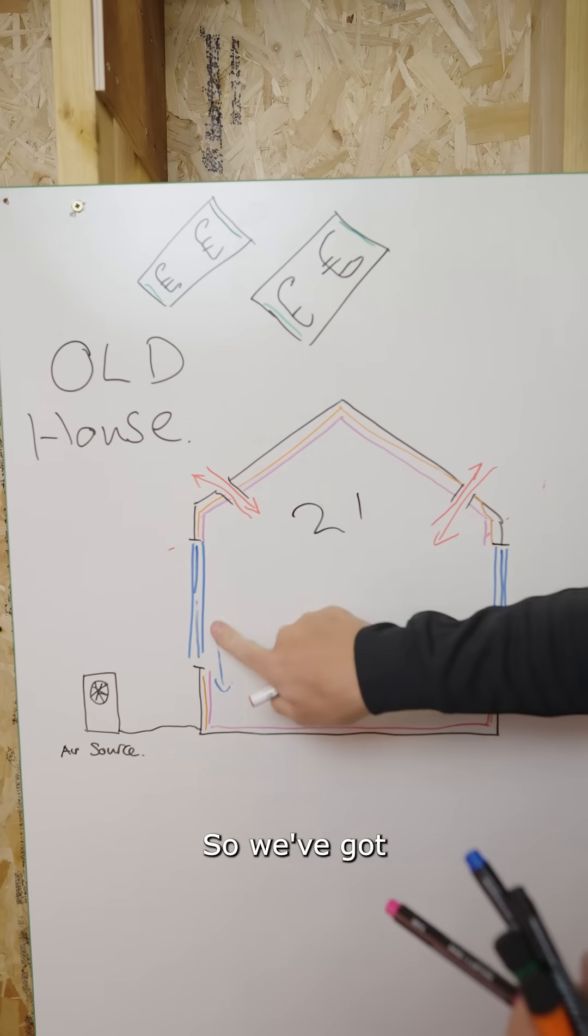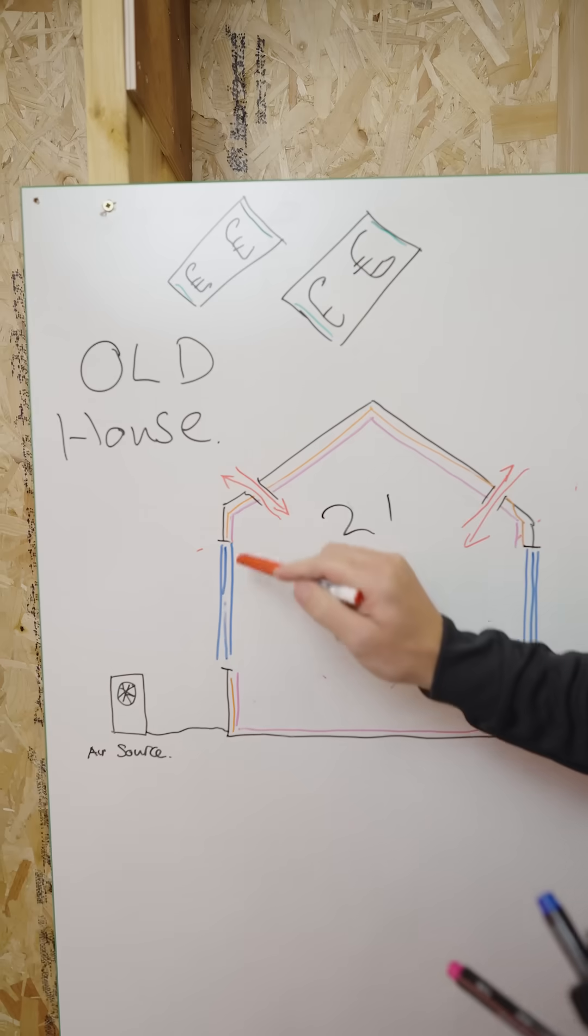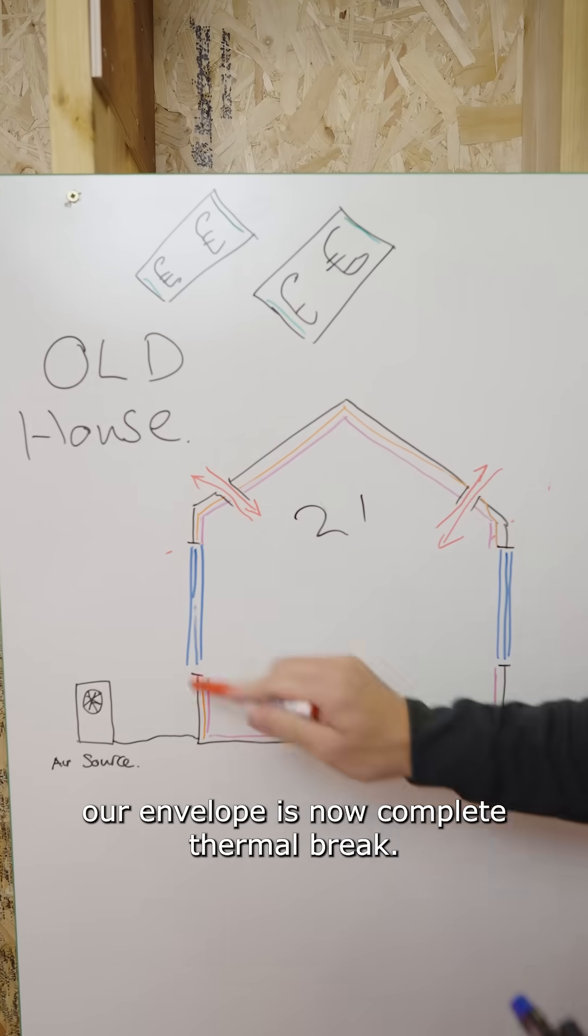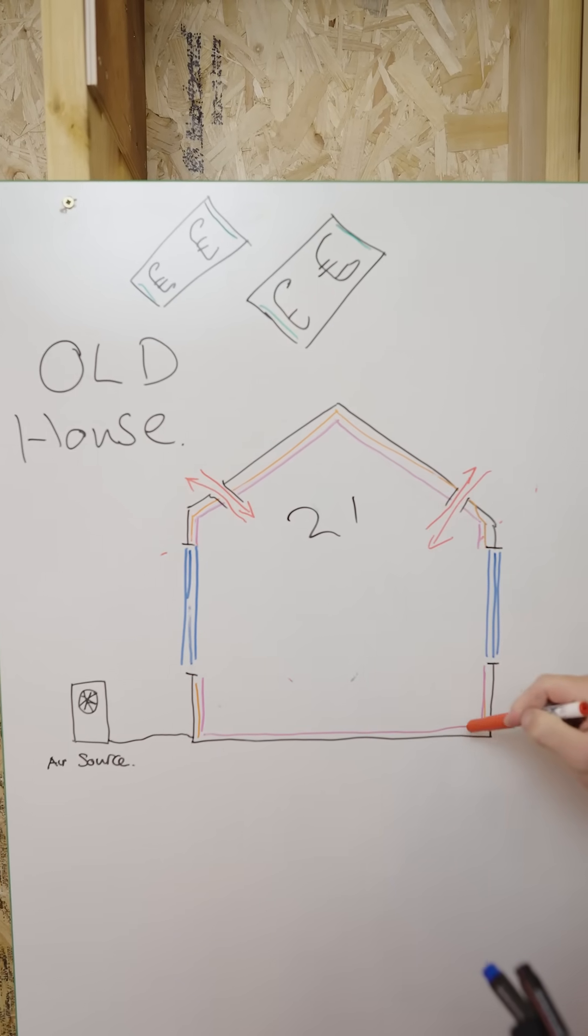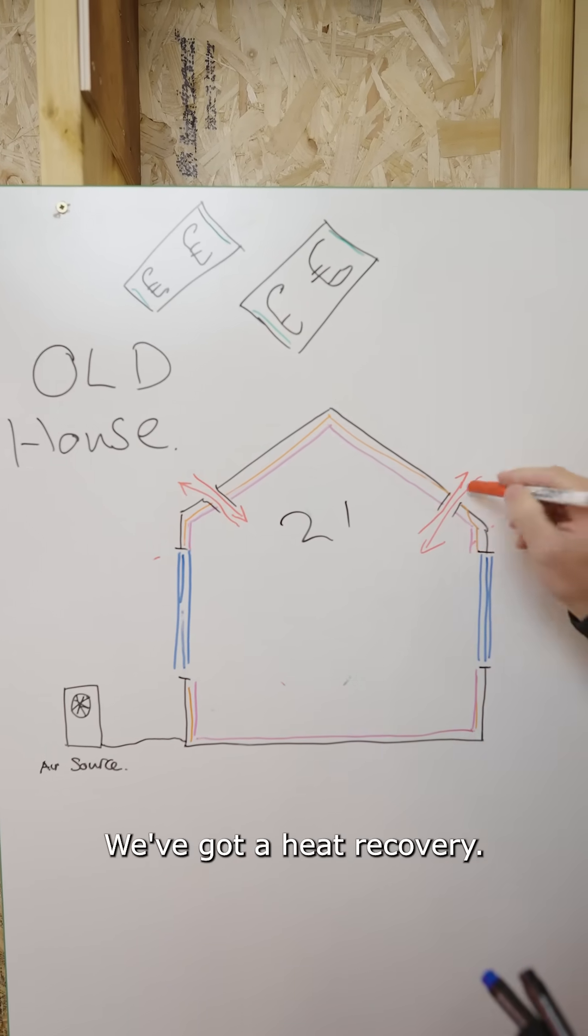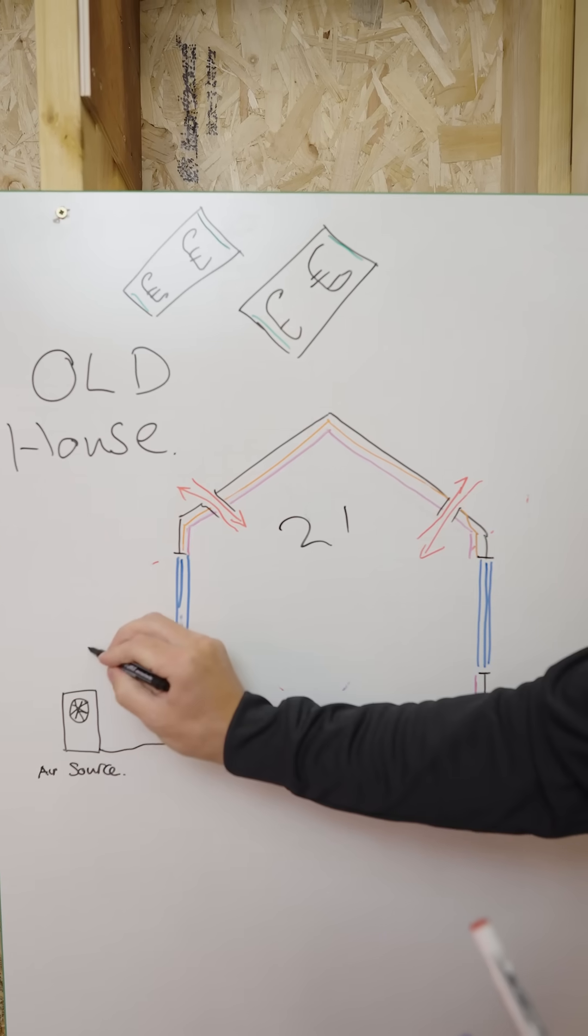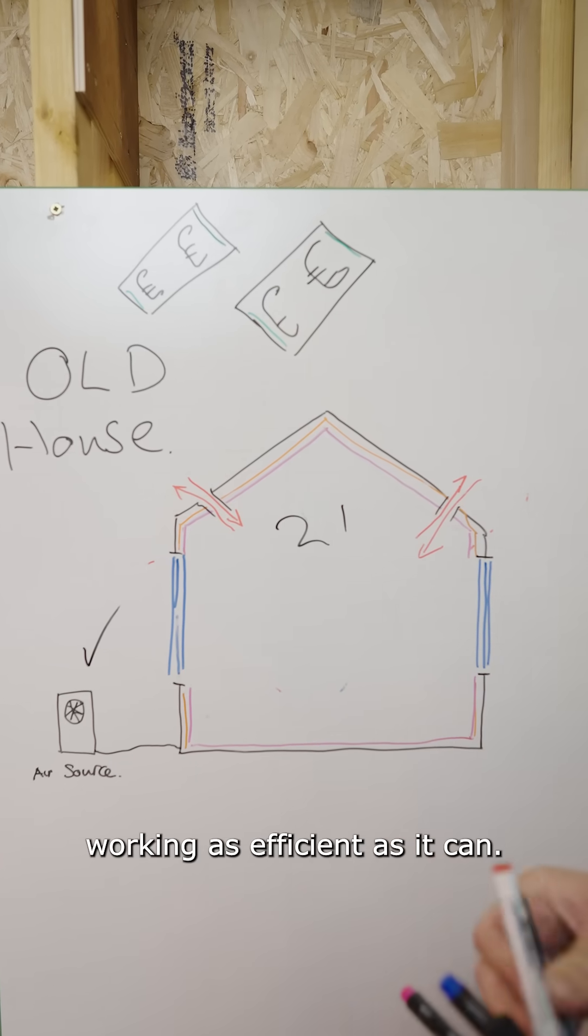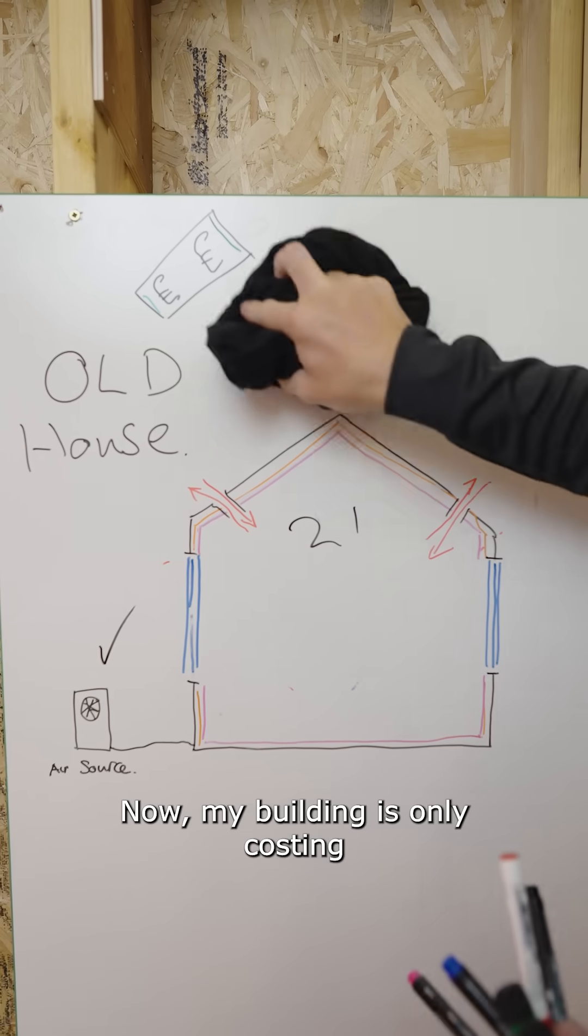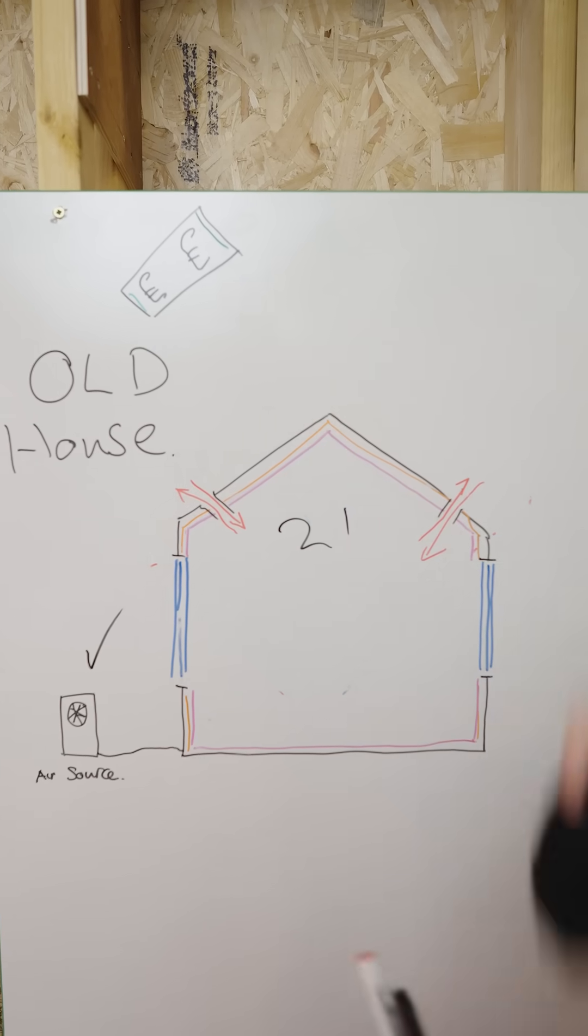So we've got our envelope is now a complete thermal break. We've got our air tightness. We've got our heat recovery. And we have our air source heat pump working as efficient as it can. And then now, my building is only costing a little bit of money.